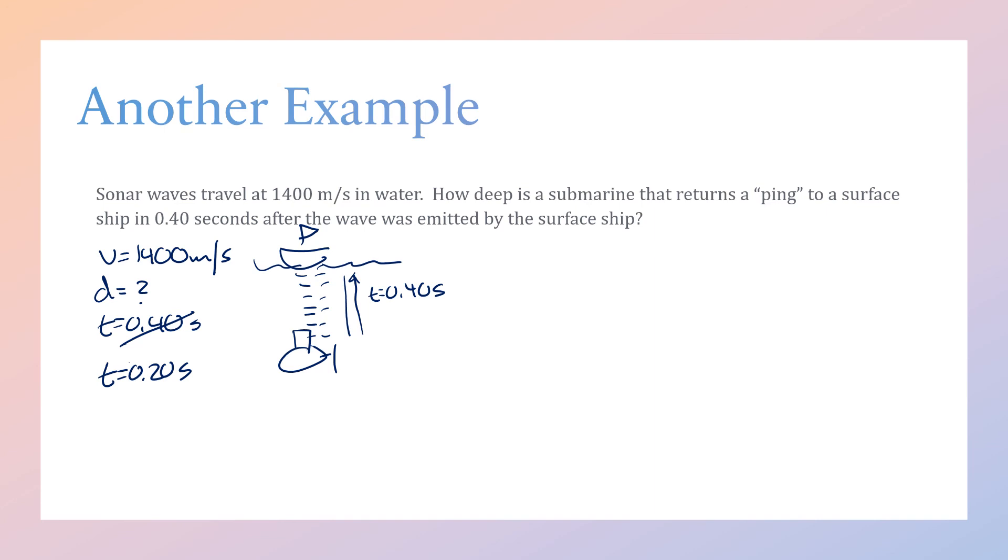There's our diagram and variables. Our working equation is going to be d = v × t. We'll substitute that in: 1400 meters per second times 0.20 seconds. 1400 times 0.2 gives us a total distance of 280 meters.